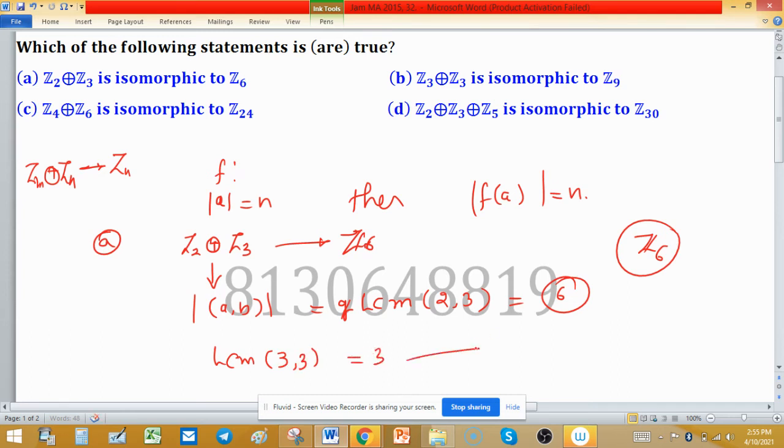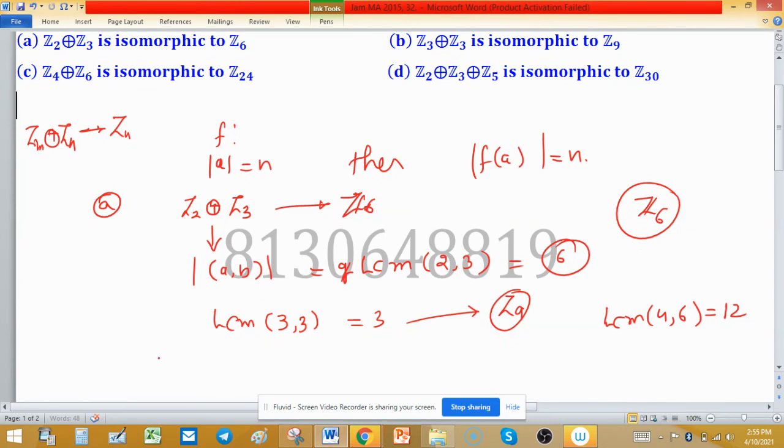In option C, the LCM of 4 and 6 is 12, and Z24 has order 24, so this is also not isomorphic.